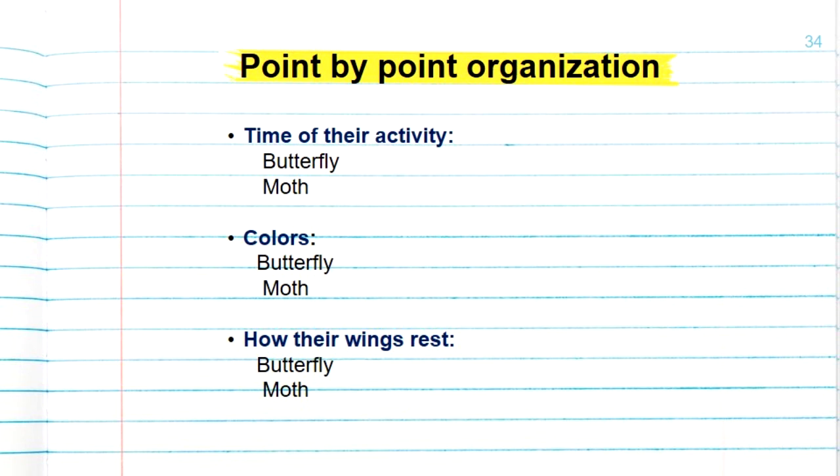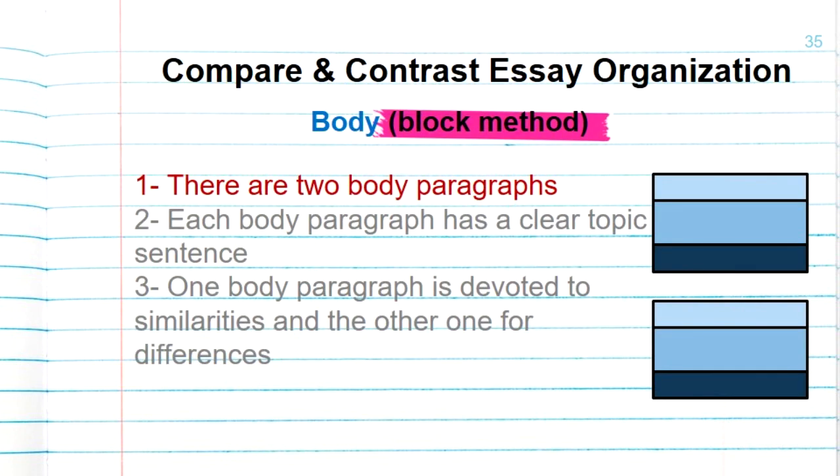In the second body paragraph I can discuss the colors of these two creatures. First I will discuss how butterflies are colorful and maybe I can mention the popular colors that usually butterflies have. And then I move to moths and show how their colors are duller compared to butterflies and what colors that they usually have. So each point of the comparison I can use a separate paragraph for it.